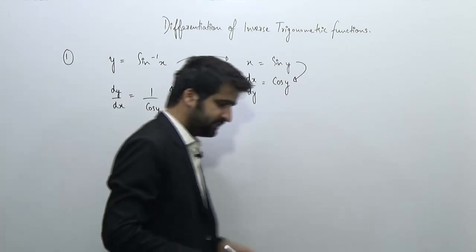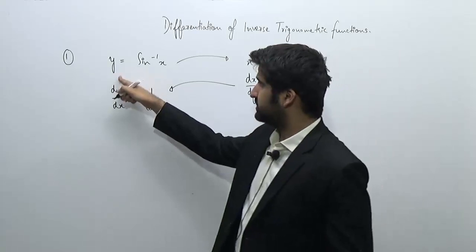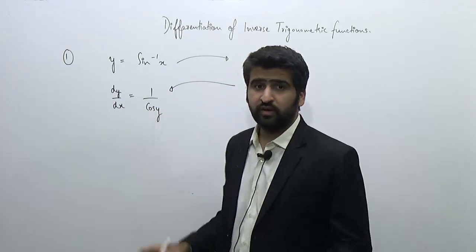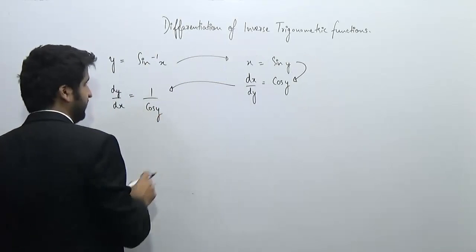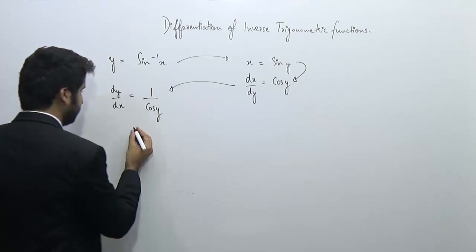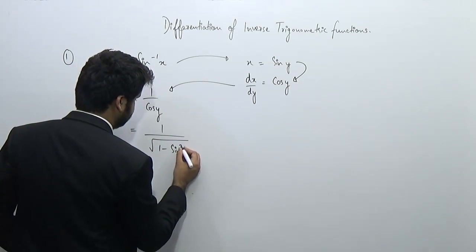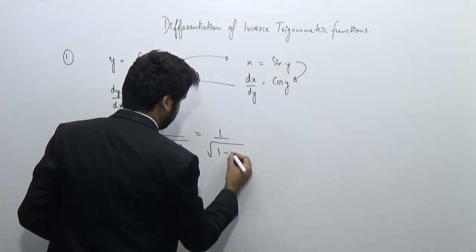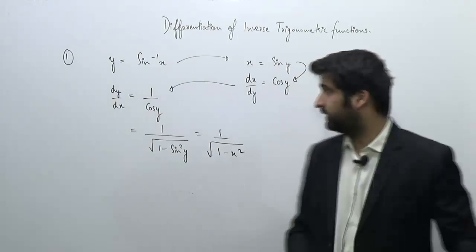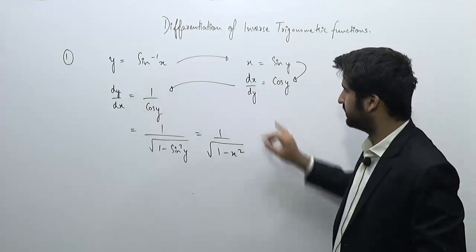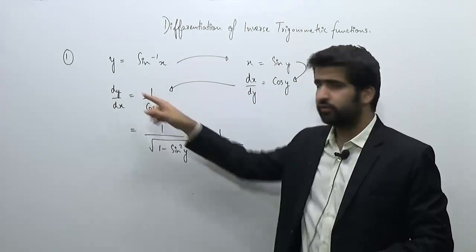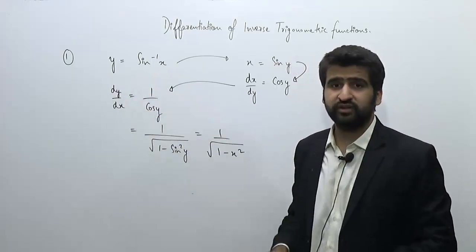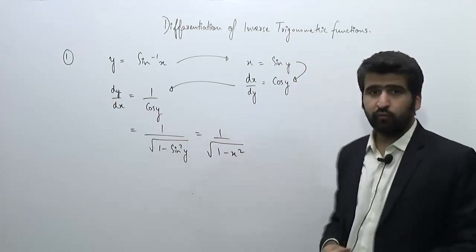Since the differentiation should be in terms of x only, we convert cos y into x. We write cos y as √(1 − sin²y), and since sin y = x, this becomes √(1 − x²). So dy/dx equals 1 upon √(1 − x²).